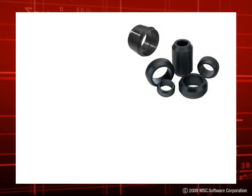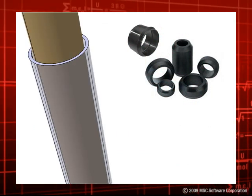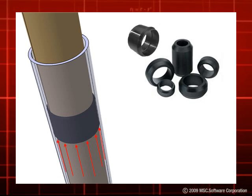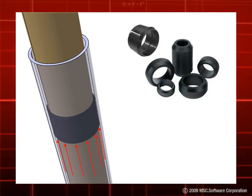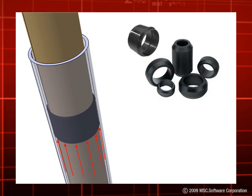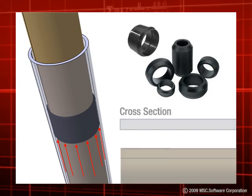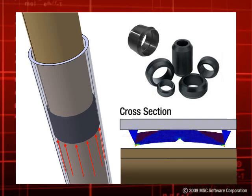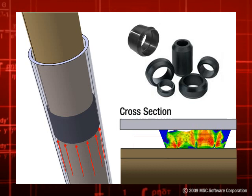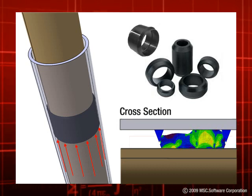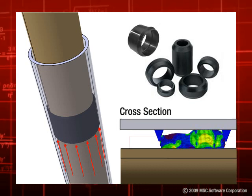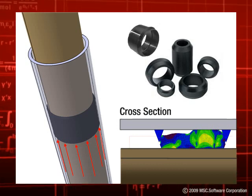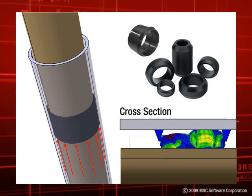Downhole packers seal off the region between casing and production tubing, helping prevent the flow of corrosive fluids upstream and also help minimize tube movement, thus preventing damage to the well. The design must permit deformation of the seal while at the same time have adequate extrusion resistance to prevent loss of volume and sealing force. These requirements are mutually exclusive, so an optimum balance is needed to achieve a successful design.